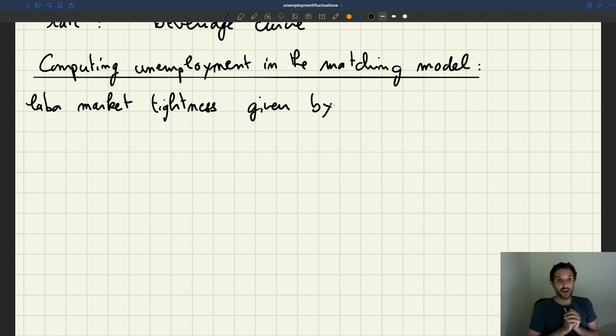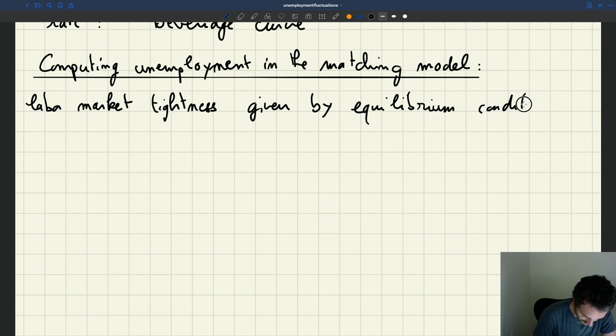So the labor market tightness is going to be given by an equilibrium condition. So the labor market tightness is not decided by anyone. It's a variable that aggregates all the decisions by all the actors in the economy. And so it's going to be given by this aggregate relationship. Remember that the aggregate is the equilibrium condition that gives the market tightness, of course, it's very key here.